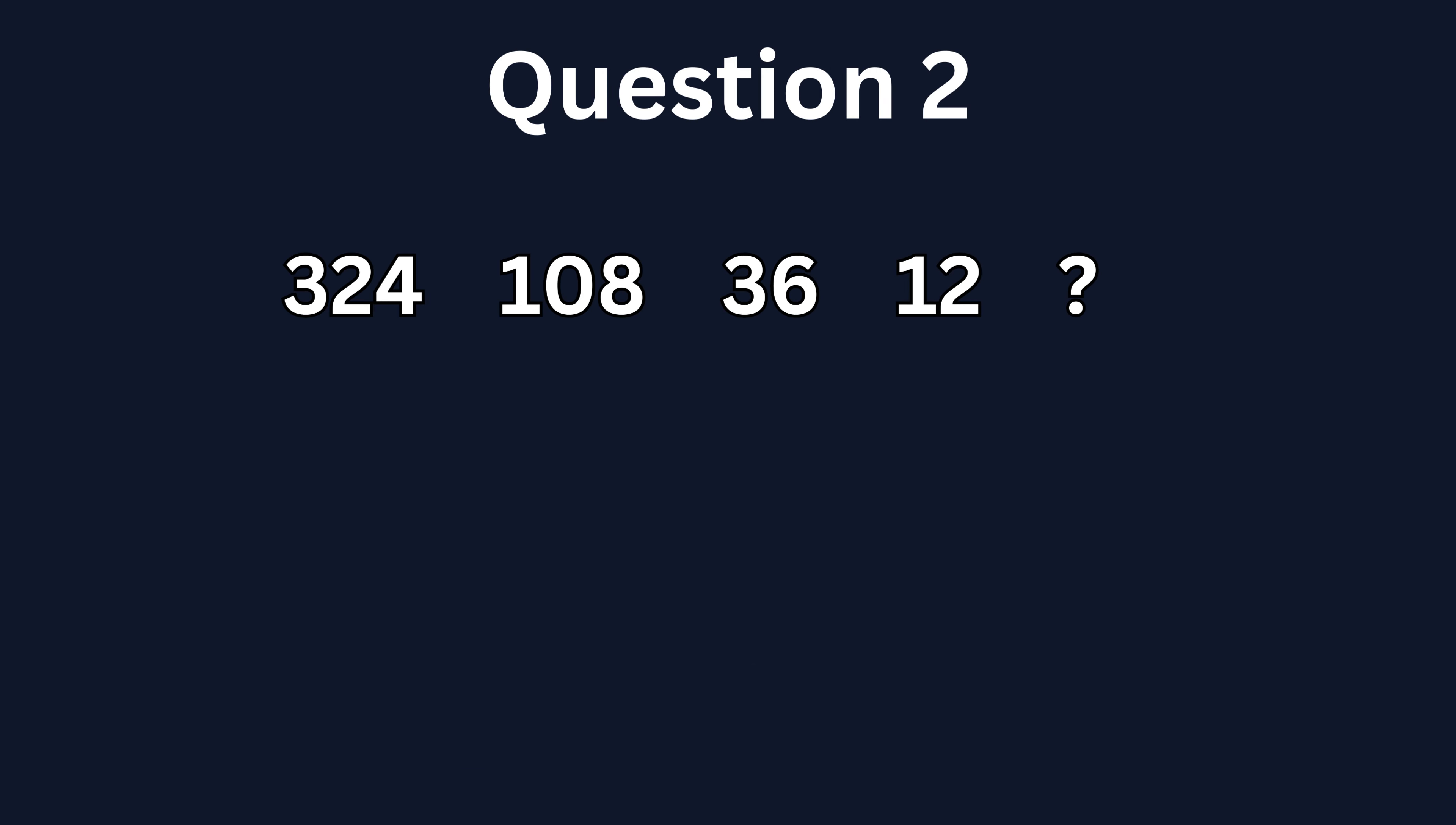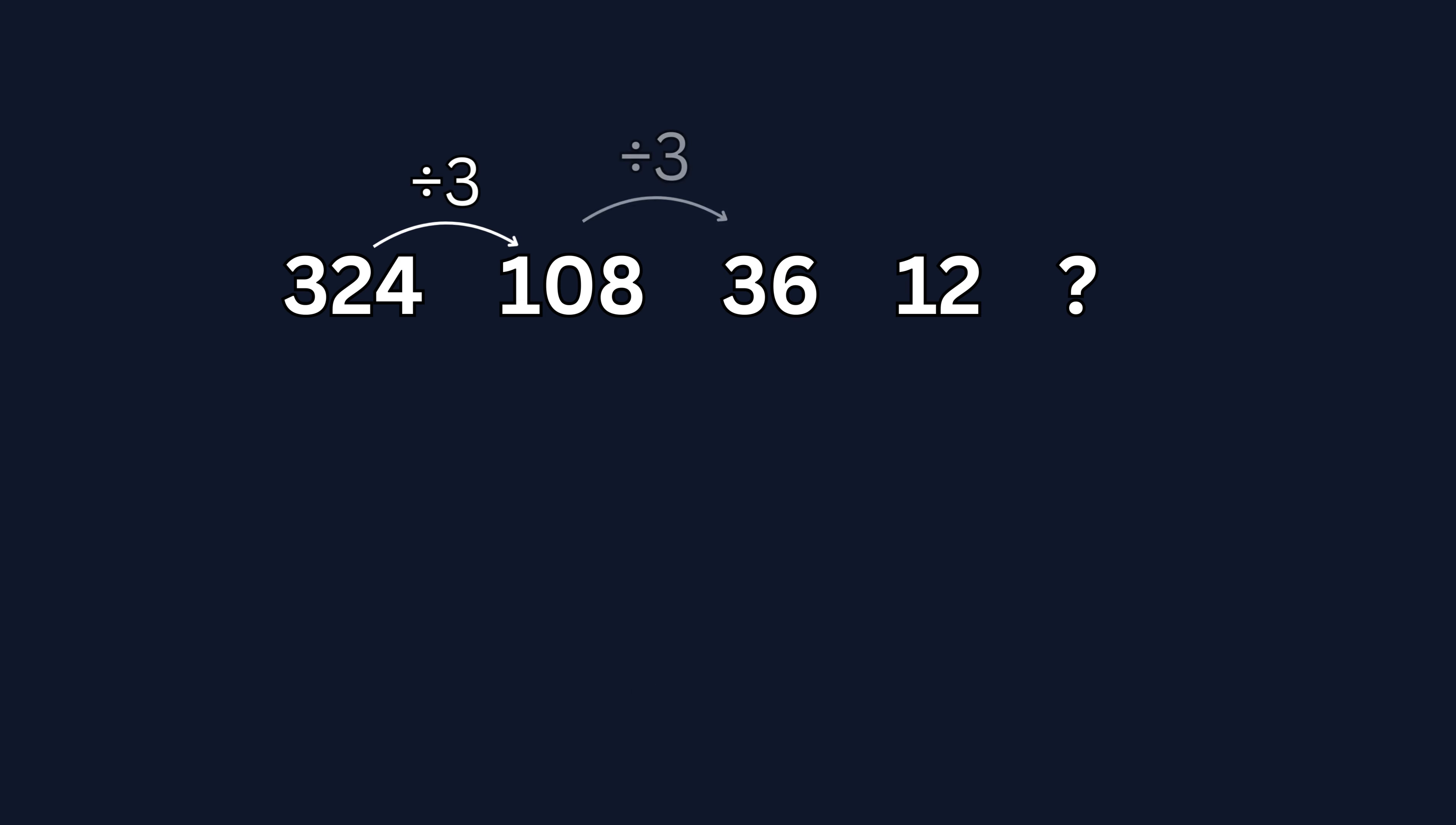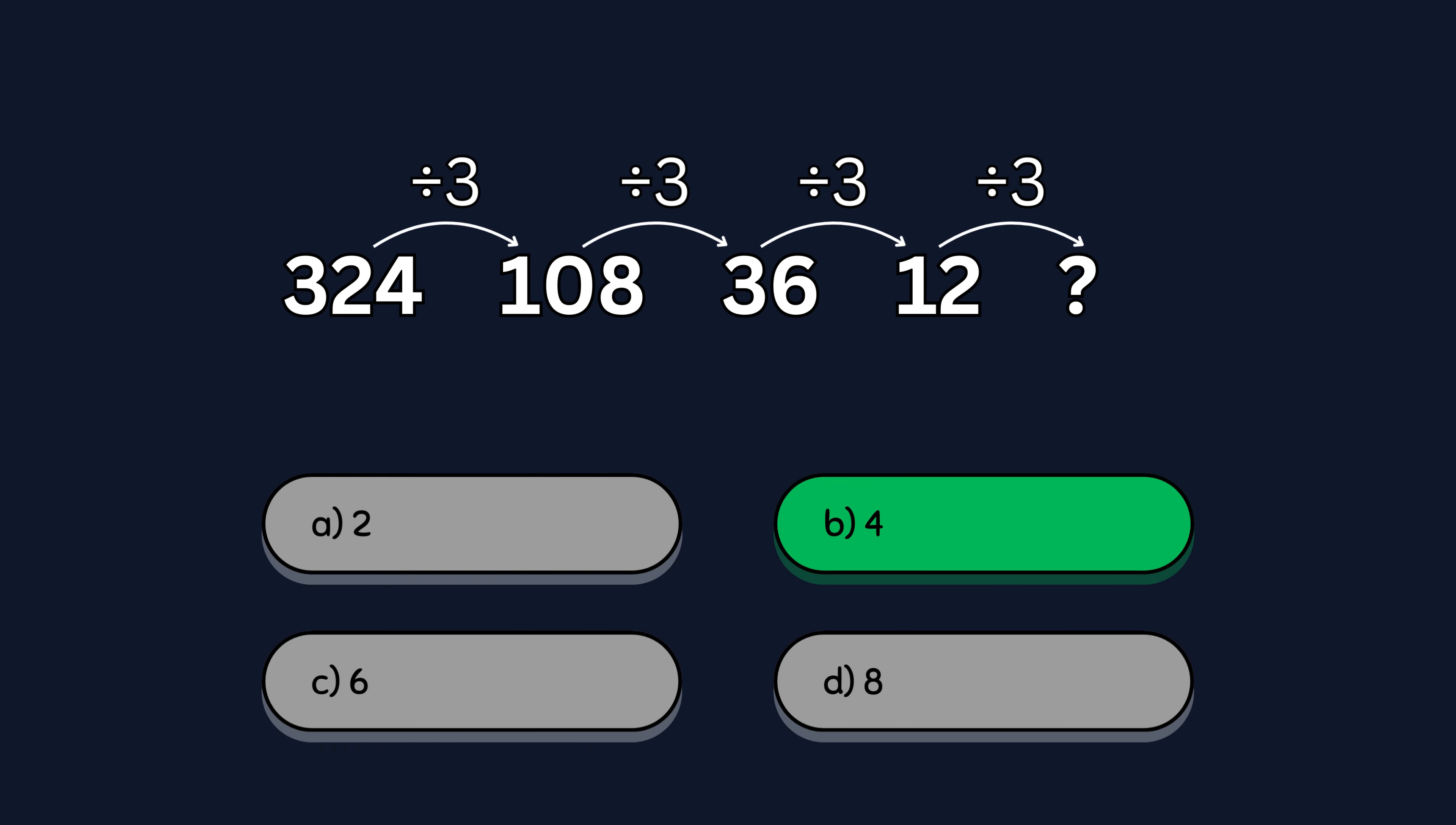Question 2. Take a look at this sequence. What number comes next? In this sequence, each number is divided by 3, so the result is 12 divided by 3 equals 4.